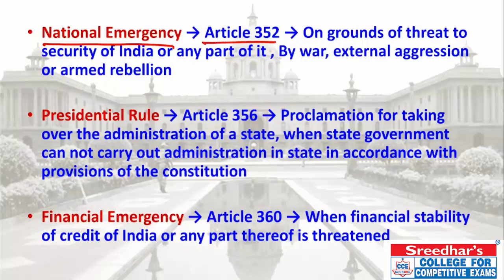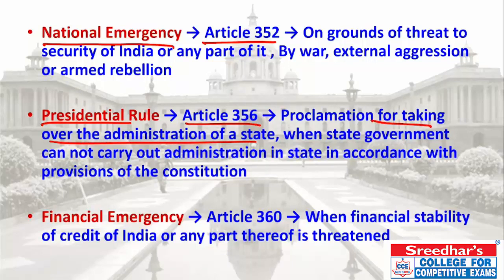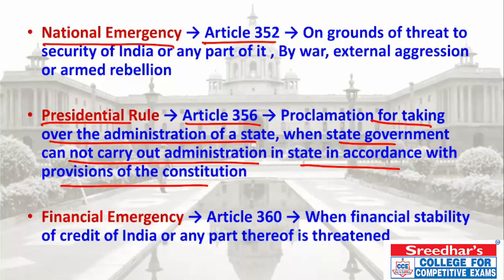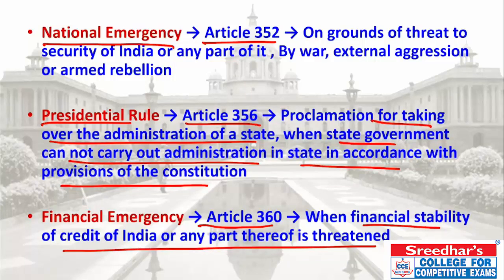Regarding emergency powers: Article 352 deals with National Emergency, which can be declared by the President on grounds of threat to the security of India or any part of it by war, external aggression, or armed rebellion. Article 356 covers Presidential Rule — when a state government fails, the entire administration of the state is handed over to the President.